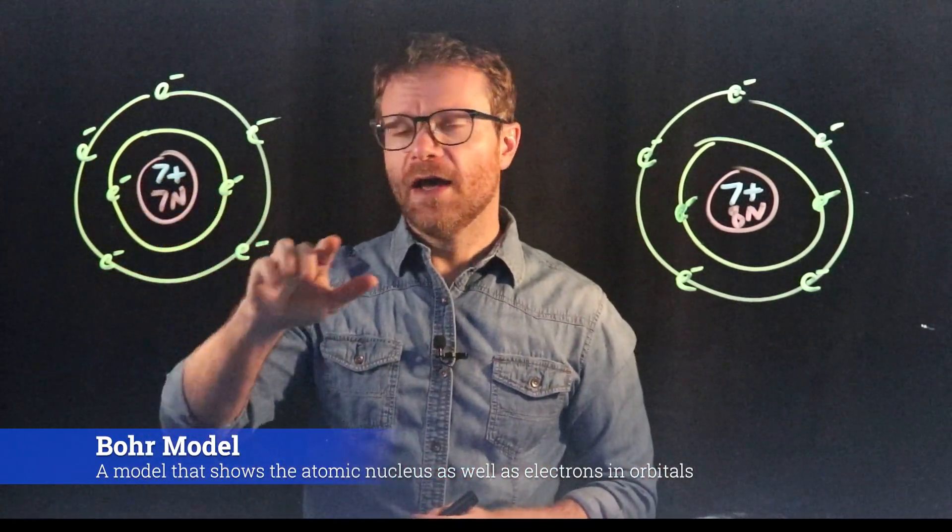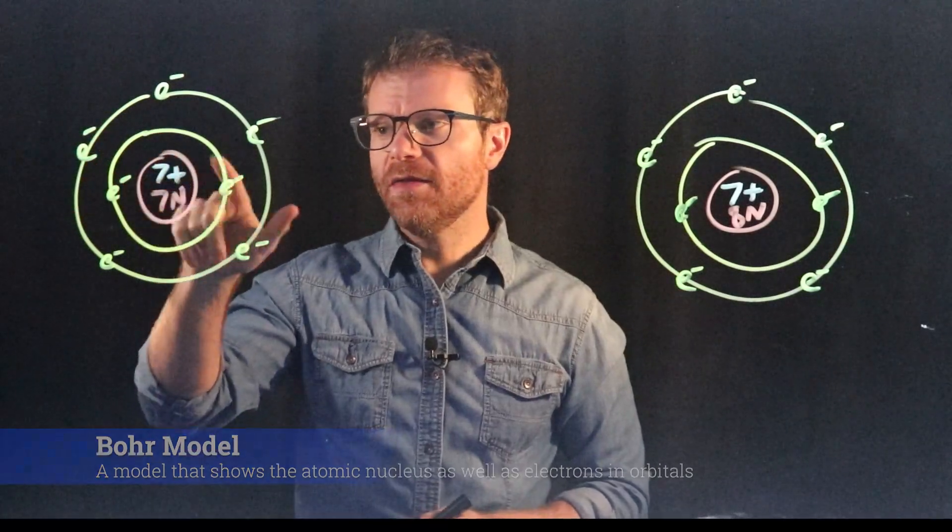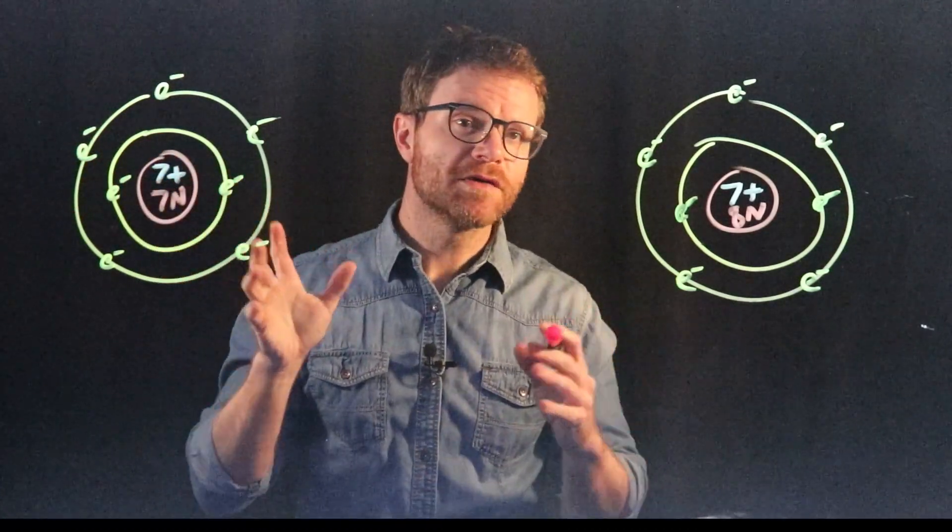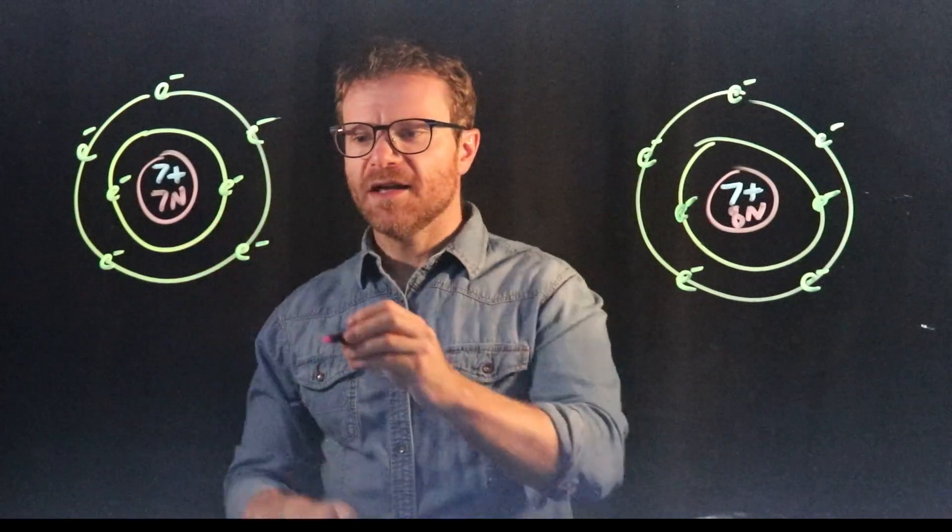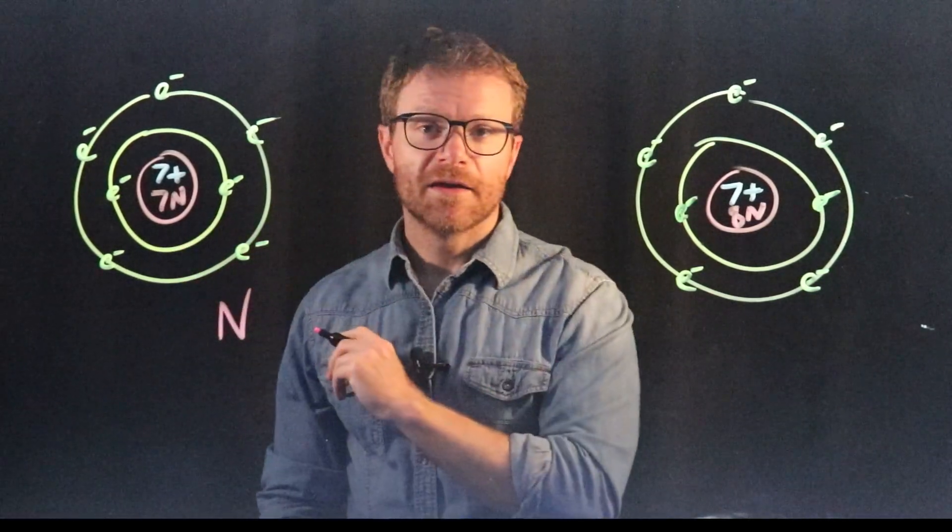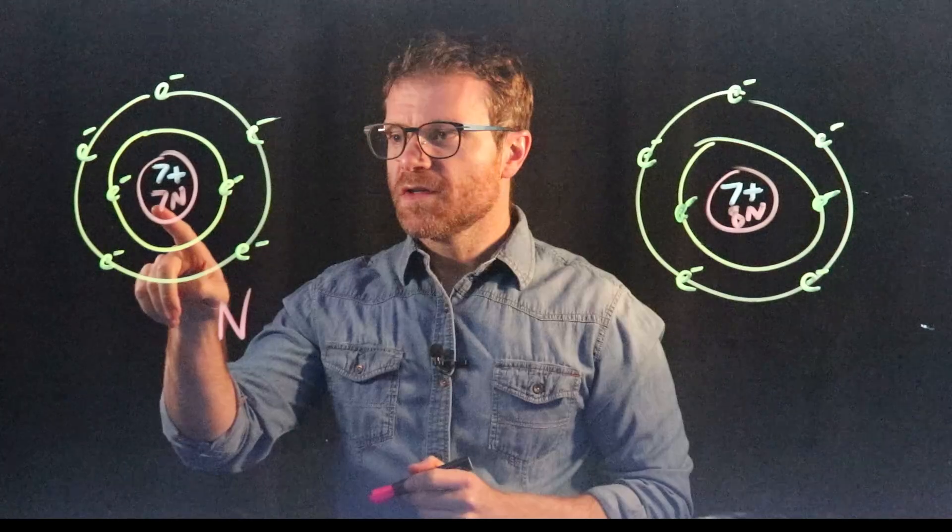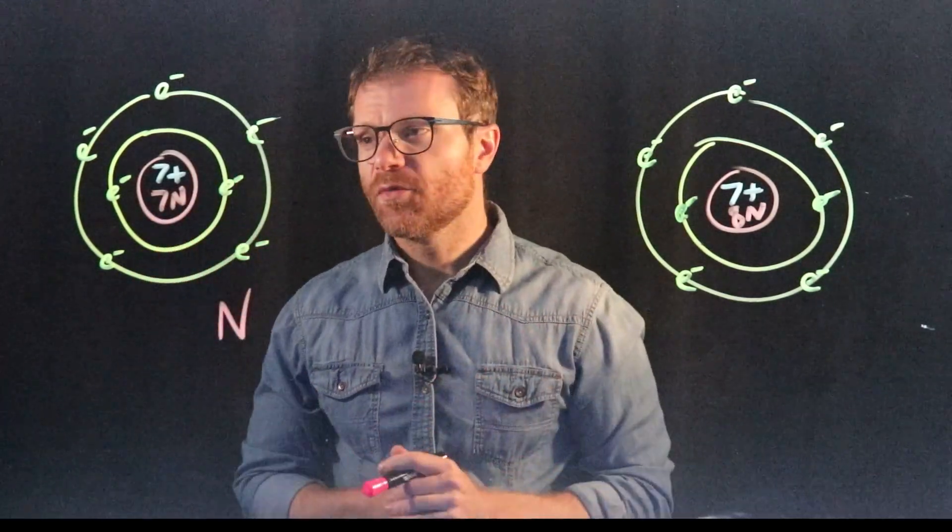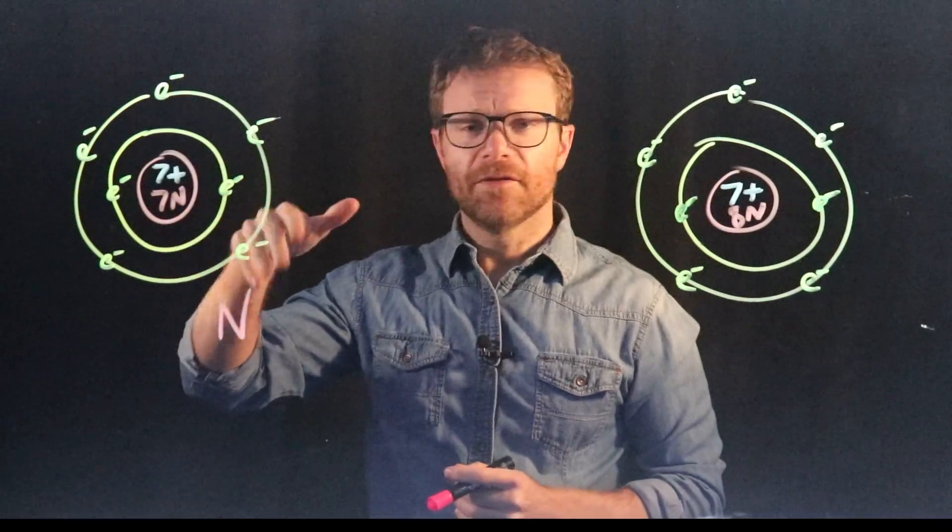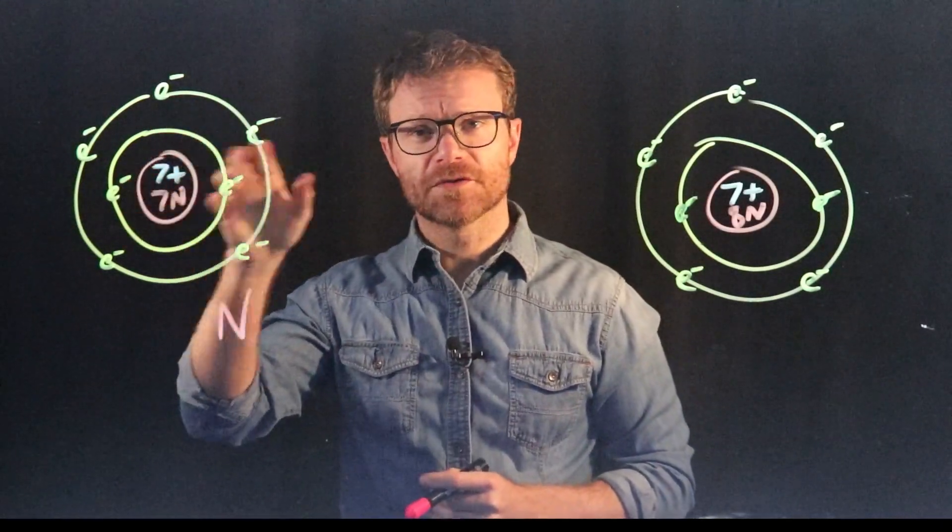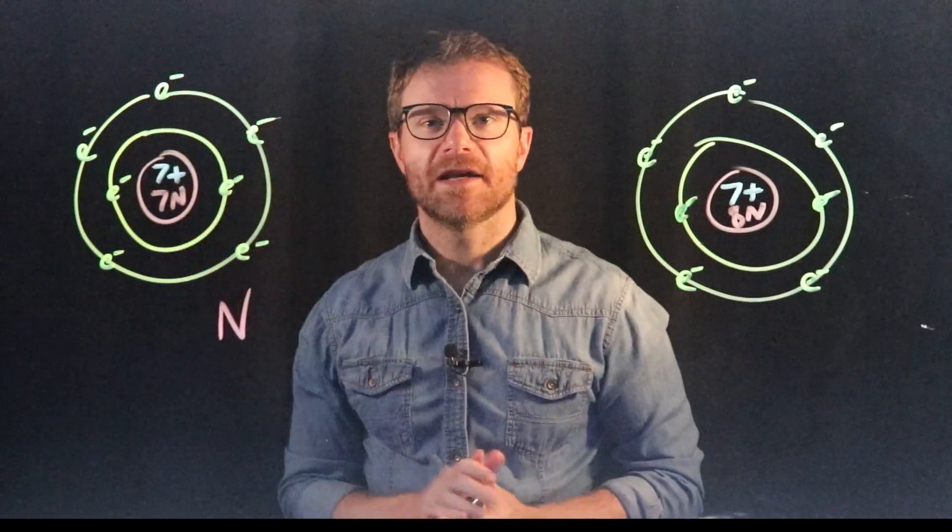Here we have an atom, and in the nucleus of that atom there are seven protons, so that means its atomic number is seven, and therefore this element is nitrogen. There's seven neutrons as well as the seven protons in the nucleus, and then orbiting that nucleus we have seven electrons, two in the first orbital and five in the second.